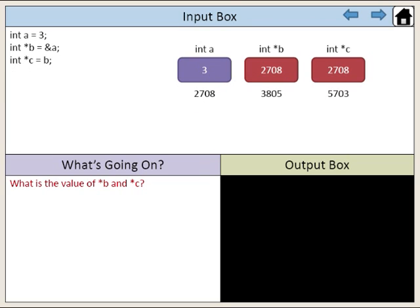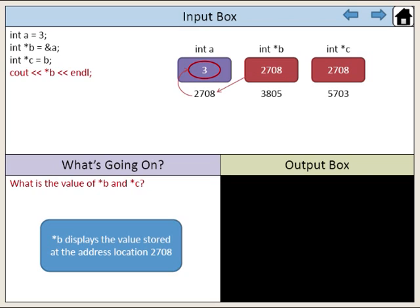What is the value of b and c using the pointer operator? Pointer b points to the address of variable a, which is 2708. Using the pointer operator with pointer b displays the value stored at the address location 2708.